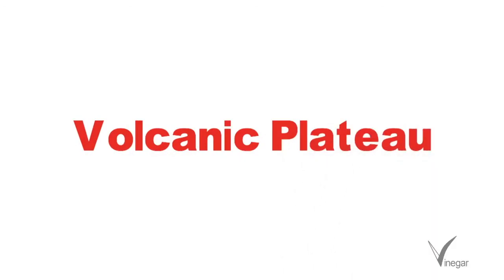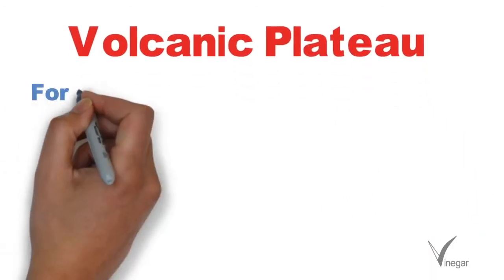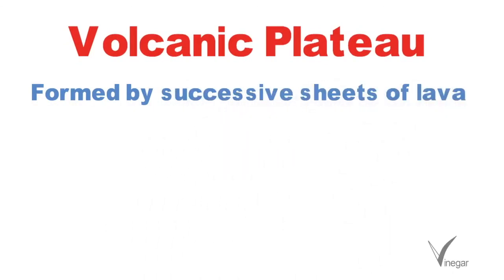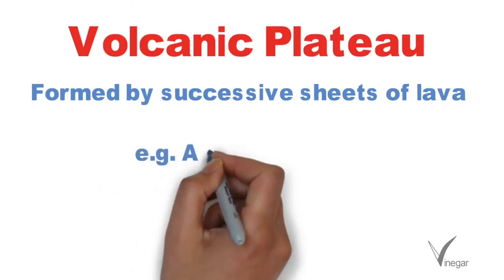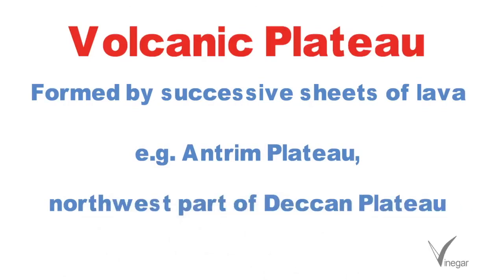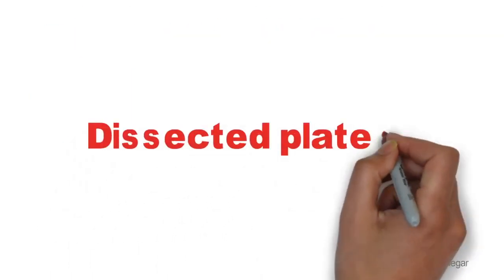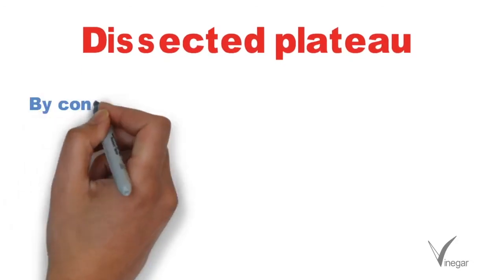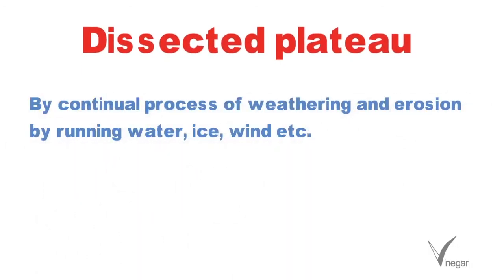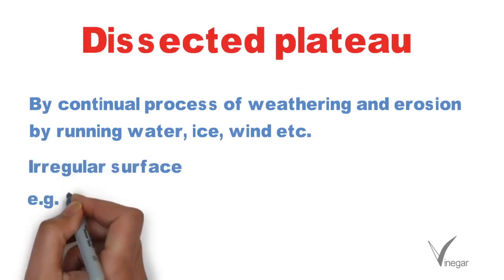The next type is the volcanic plateau. Molten lava which comes out of Earth's crust keeps spreading over wide areas. Successive sheets of basaltic lava get accumulated, ultimately solidify, and form the lava plateau. An example is the Antrim Plateau in Northern Ireland and also the northwestern part of the Deccan Plateau. The third type is the dissected plateau, formed by continual weathering and erosion by running water, ice, and wind. Its surface is quite irregular, and an example is the Scottish Highlands.